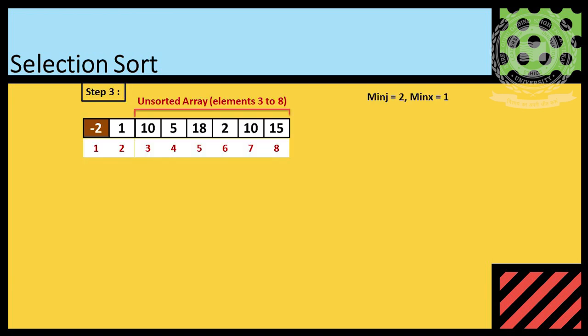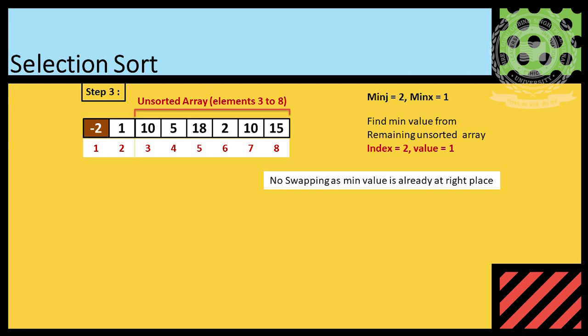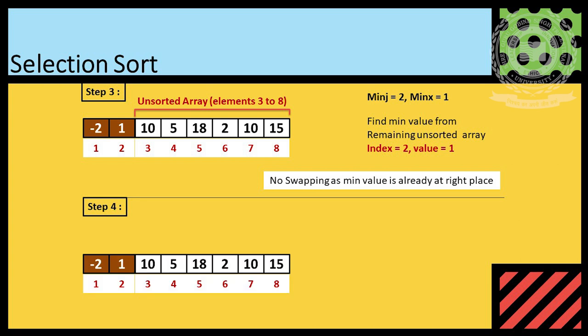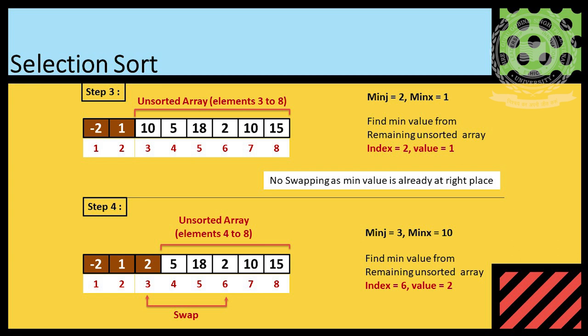In next step, minimum element is searched from unsorted array, that is 1, and placed at correct location. In next step, minimum element is searched from unsorted array, that is 2, and swapped at 3rd location.